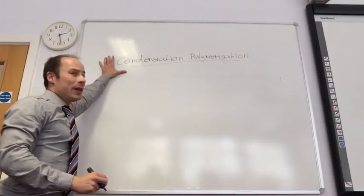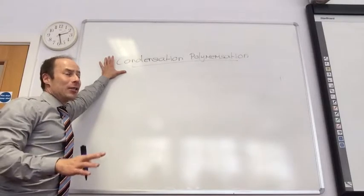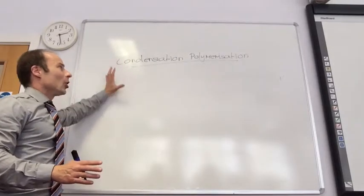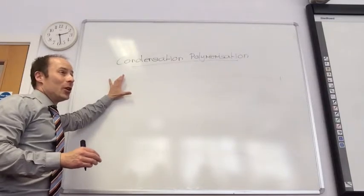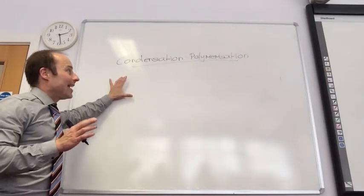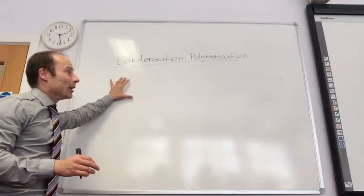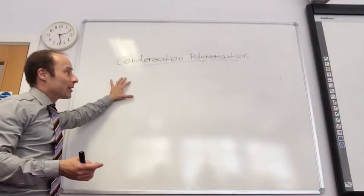So, addition polymerization: alkenes must have a double bond. Condensation polymerization generally occurs when I have esters making polyesters or polyamides. And we're going to look at both of those examples.